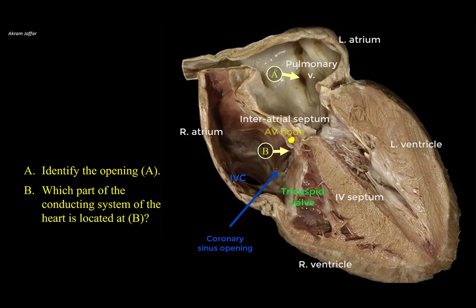The AV node is the backup pacemaker. The natural pacemaker is the SA node, located at the opening of the superior vena cava, close to the superior end of the crista terminalis. The AV node conducts the impulse to the ventricles along the AV bundle, which passes through the membranous part of the interventricular septum, then splits into right and left bundle branches as it reaches the muscular part.